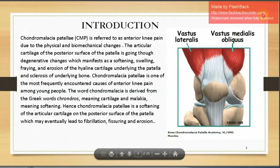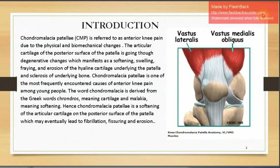Chondromalacia Patella (CMP) is referred to as anterior knee pain due to physical and biomechanical changes. The articular cartilage of the posterior surface of the patella goes through degenerative changes, manifesting as softening, swelling, fraying, and erosion of the hyaline cartilage underlying the patella, along with sclerosis of the underlying bone. The word is derived from Greek: 'kondros' meaning cartilage and 'malacia' meaning softening.